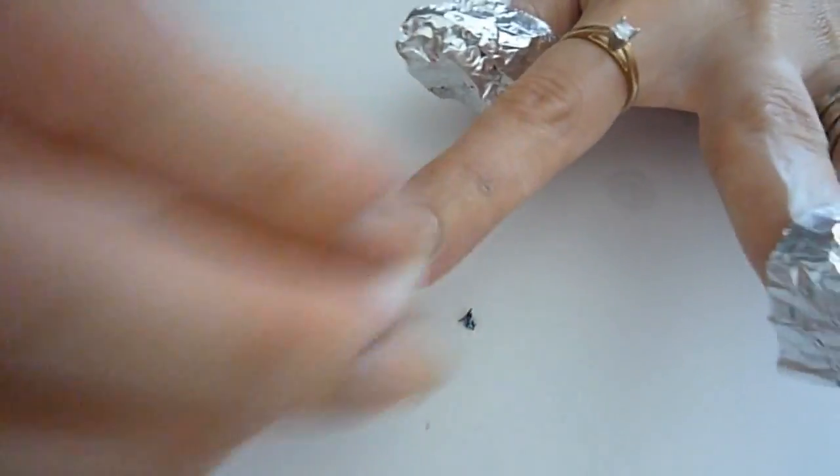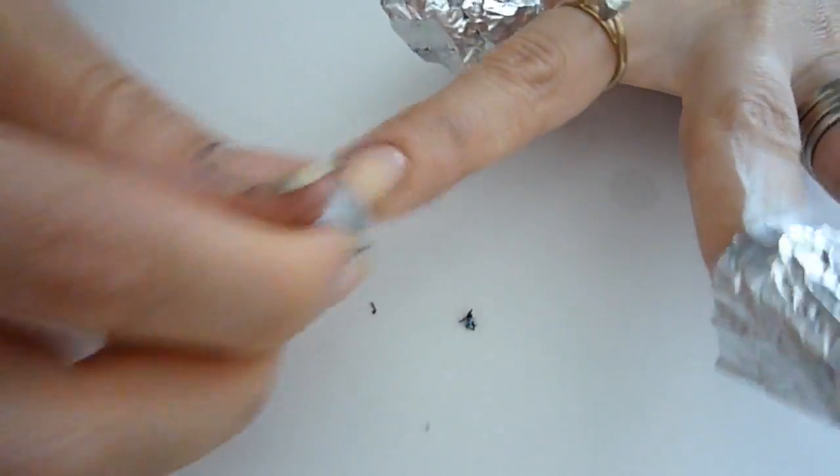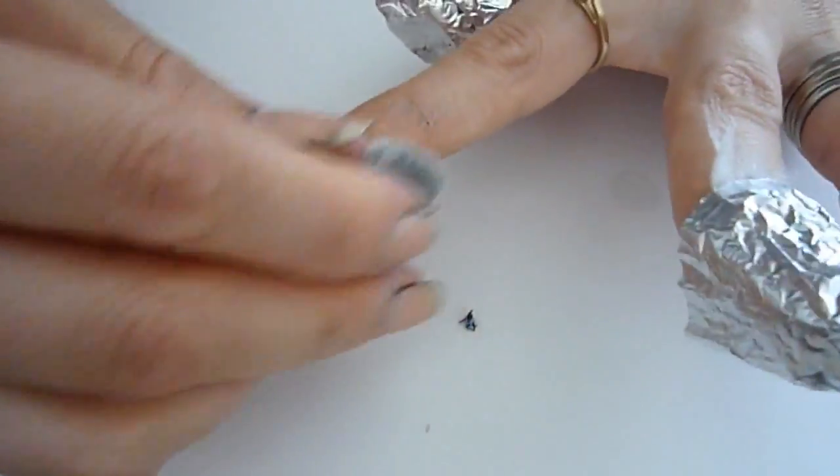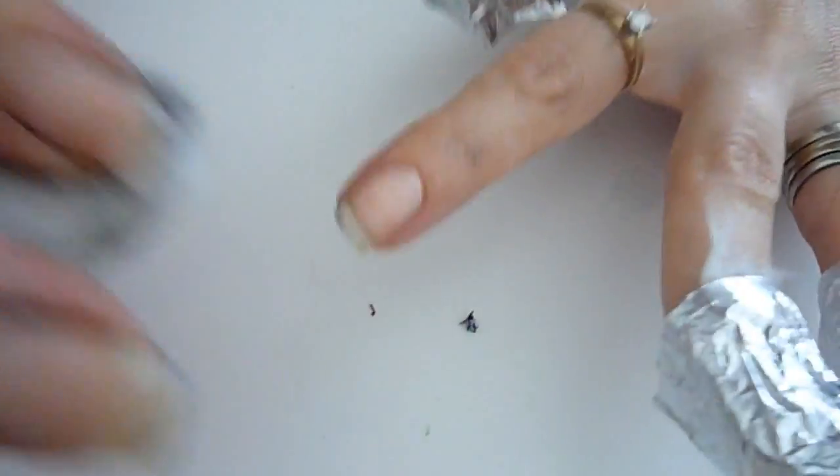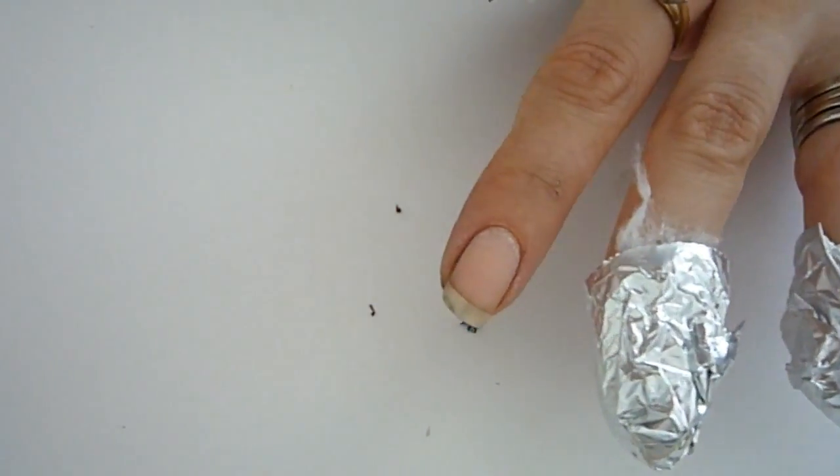But at this point once the top gel is off, then all you have to do is clean up your nail with some more pure acetone on a clean cotton swab. So I will do this to the rest of my nails and I'll come back and show you the rest.